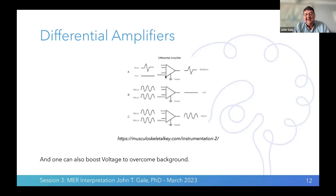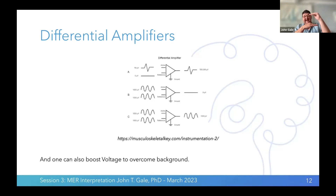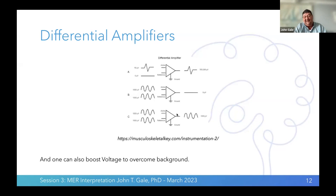If both signals are recording the same noise and you subtract them, you get zero output — a completely flat line. These differential amplifiers allow you to record your signal and some other activity in the brain as noise; when you subtract it, what you're left with is only the spiking activity. These differential amplifiers are designed to help us get rid of noise.